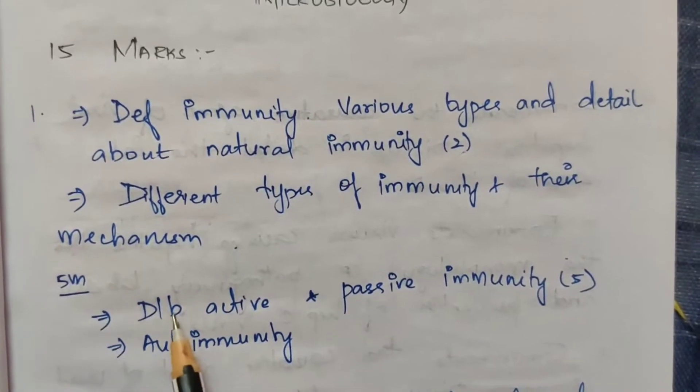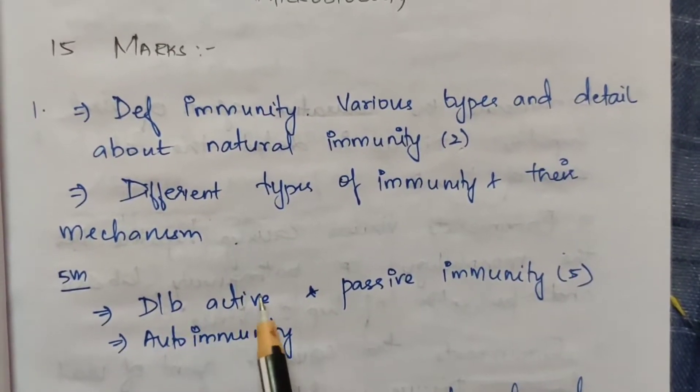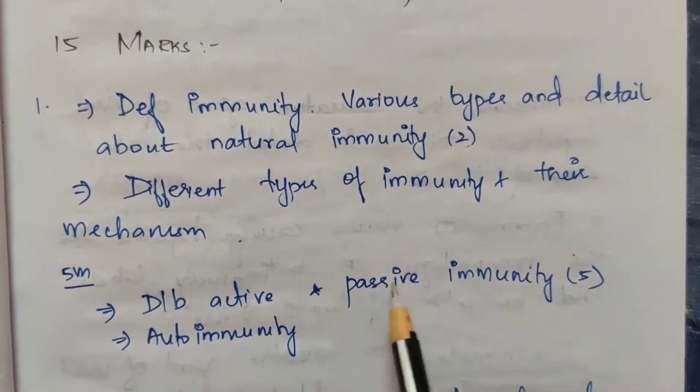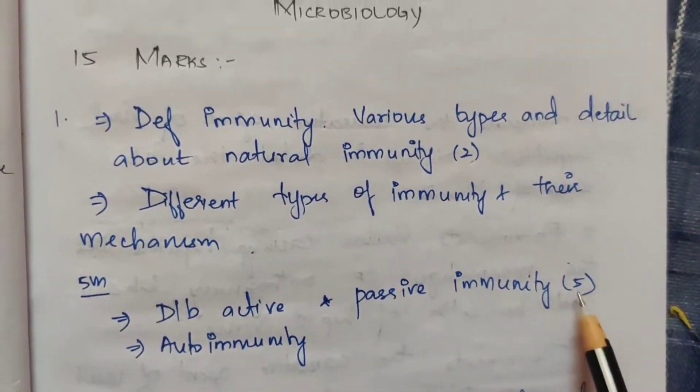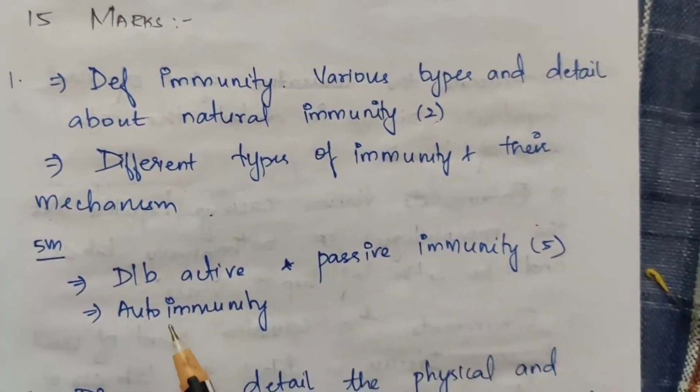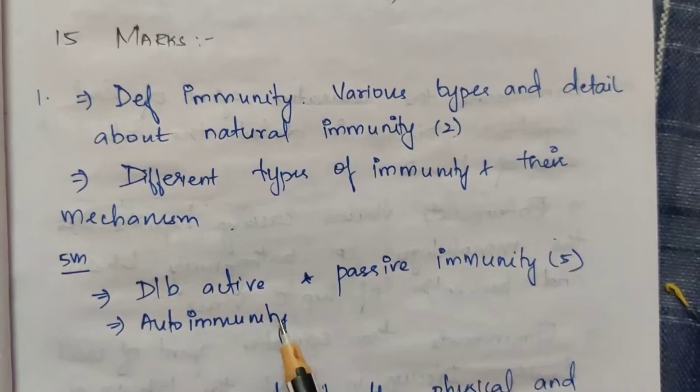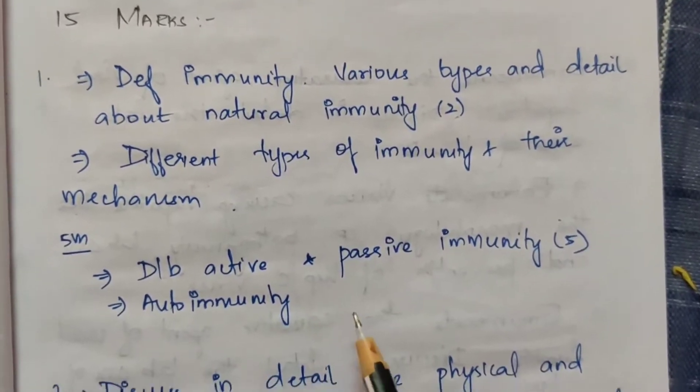For 5 marks, immunity-related questions have appeared 5 times. These include active and passive immunity. So there are multiple 5-mark questions on immunity covered in this section.